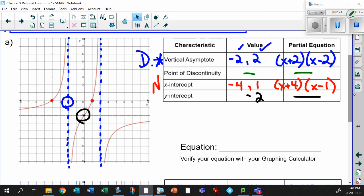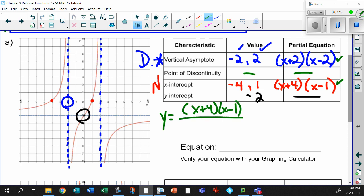Okay? So with all of that said, look at the partial equations that you have. Okay? Ones that go in the numerator. Ones that go in the denominator. So think about it. You're going to have some sort of equation. Y equals. You're going to have the numerator and the denominator. So in the numerator, you're going to have x plus 4, x minus 1. In the denominator, you're going to have x plus 2, x minus 2. There's your non-permissible values, right?